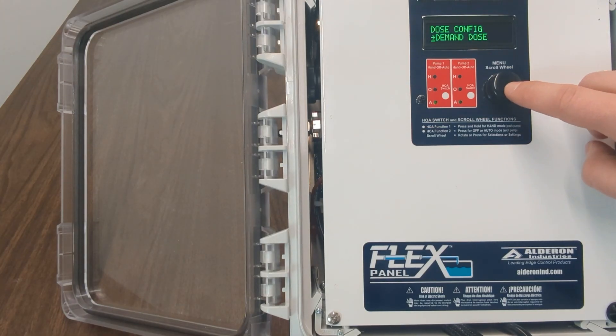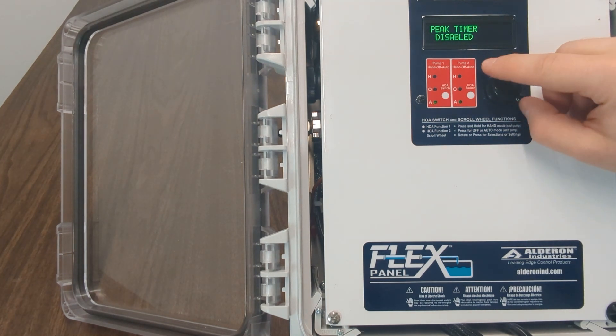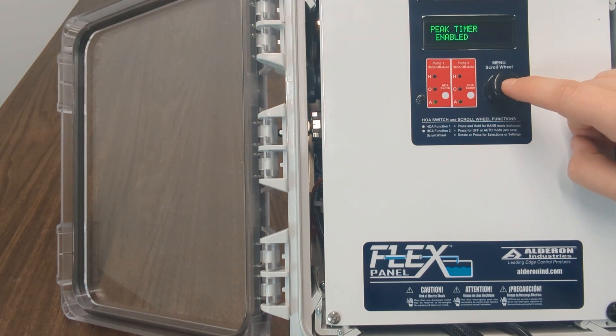Return to the setup wizard and this time select time dose. Next, the system will ask if you want a peak timer which is activated with the peak timer enable float switch. We will say yes and click enabled.